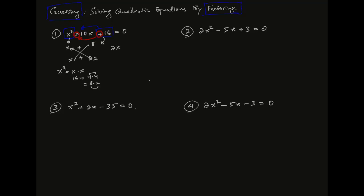x is equal to 2x. And the second one for this one is 2x. In the first one, the plus and the 2x is equal to 2x. This is plus 2 times x plus 2x. The second one is equal to 1x. This is plus 8 times x plus 8x.